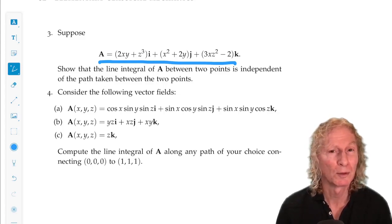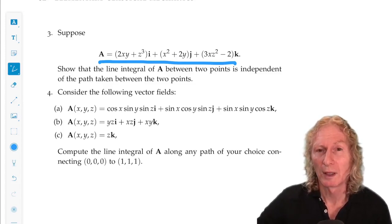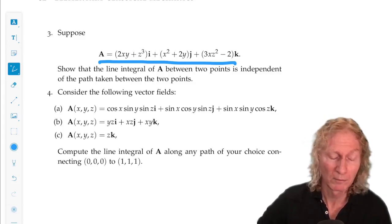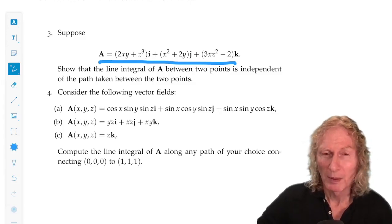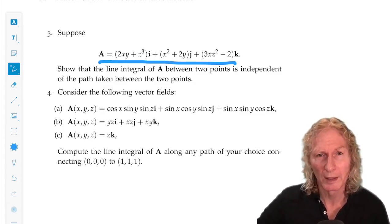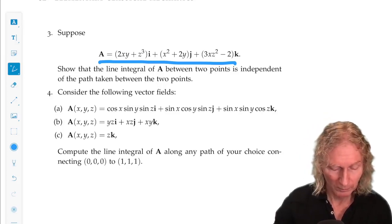You could find the scalar valued function of x, y, z so that the gradient of that function is A. That's a good exercise. But the easiest way is just to do a straightforward calculation. Compute the curl of A. If that's zero, then you've answered the question.